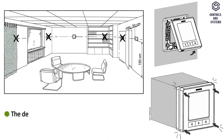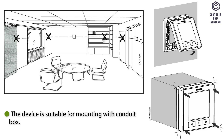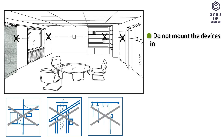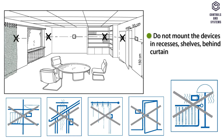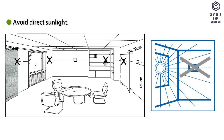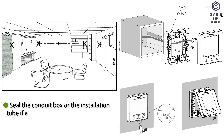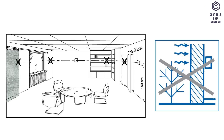Mounting: the device is suitable for mounting with a conduit box. Recommended height is 1.50 meters above the floor. Do not mount the devices in recesses, shelves, behind curtains or doors, or above or near heat sources. Avoid direct sunlight. Seal the conduit box or the installation tube if any, as air currents can affect sensor readings. Adhere to allowable ambient conditions.